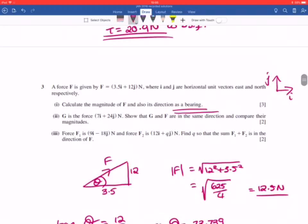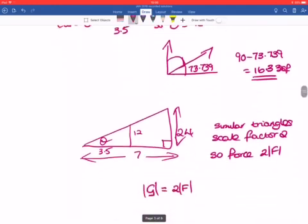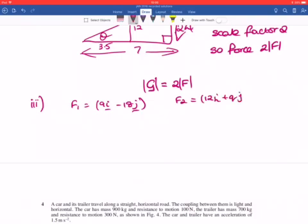Question 3. Force F is 9i minus 18j. And force F2 is 12i plus qj. Find Q so that the sum F1 and F2 is in the direction of F. So it's just addition of vectors. Part 3. We've got F1 equals 9i minus 18j. And F2 is 12i plus qj. And what we basically want is them to have the same direction.